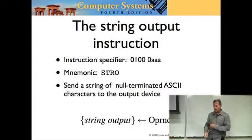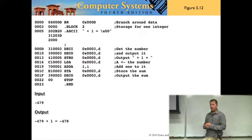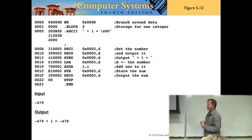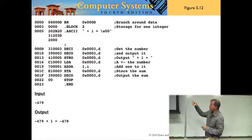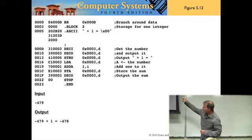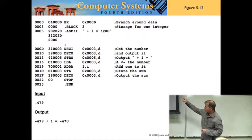Figure 5.12 shows a program demonstrating how STRO output works — the same program we demoed before that output each character one at a time, but this time outputting the entire string with the STRO command. One difference in this version is that all the data is put at the top. The very first instruction branches to 000D, branching around the dot block with two bytes — storage for the integer — and also around the dot ASCII string.